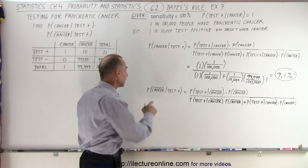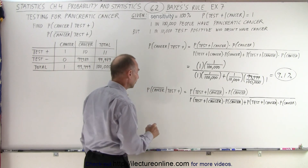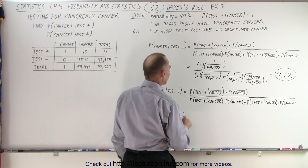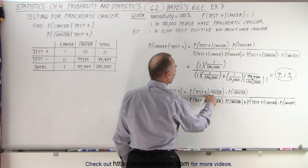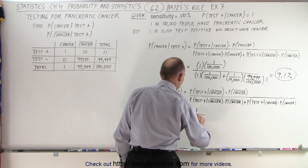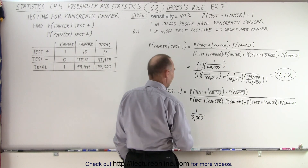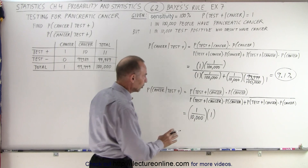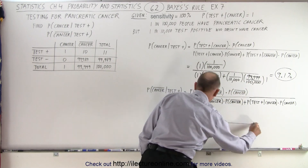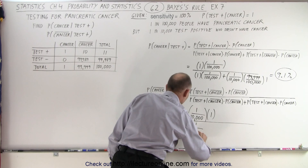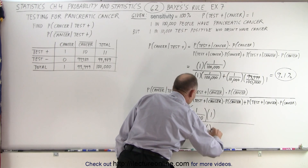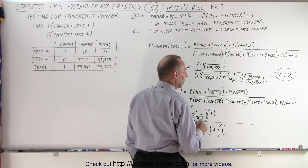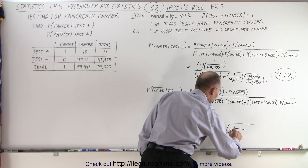Now, what is the probability that you don't have cancer if you test positive? Well, of course that should be 100 minus that, but let's find out if the numbers come out that way. This is equal to the probability you'll test positive if you don't have cancer, which would be 1 in 10,000, because 10 out of 100,000 meet that criteria. We multiply that times the probability that you don't have cancer, which is virtually 1. Divided by: 1 in 10,000 times 1, plus the probability that you test positive if you have cancer, which is 1, times the probability of having cancer, which is 1 in 100,000.